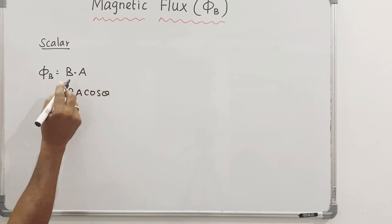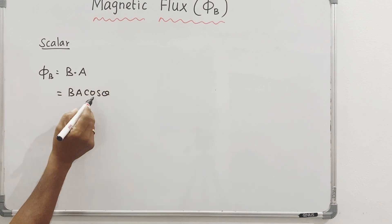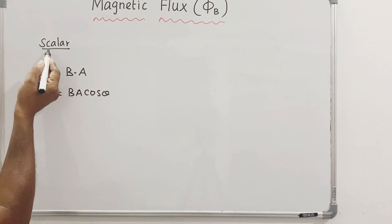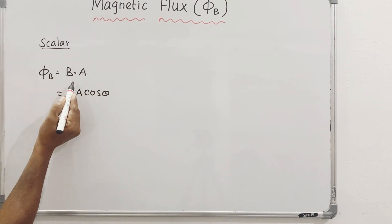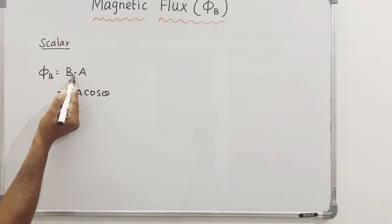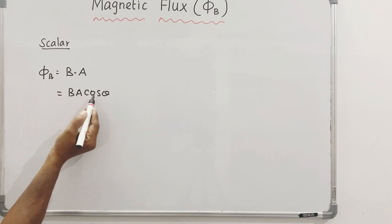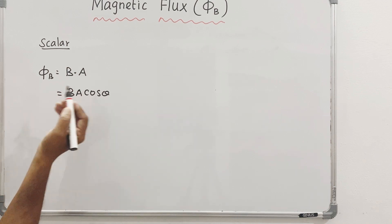Why do we call it cos theta? Because it is a scalar dot product. The scalar product gives us cos theta.